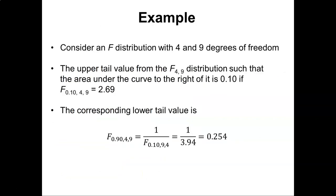For an example, consider you have an F distribution with four and nine degrees of freedom. The upper tail value from the F distribution with four and nine degrees of freedom is the area under the curve to the right of it. If the level of significance we're interested in is 0.10, we could write that the value F at 0.10 with four and nine degrees of freedom is 2.69.